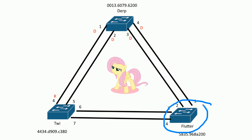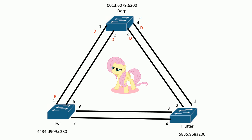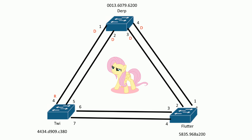So let's look at flutter. You know the drill — lowest cost. This is a cost of 38, 38, which we already established. So this is a cost of 19 and 19 — these two links look better. When the BPDU frames came down from derp it was a cost of zero, and on ports one and two flutter added a cost of 19 because that's the speed it was running at — fast ethernet — giving a cost of 19. So we tie on costs on these two ports.